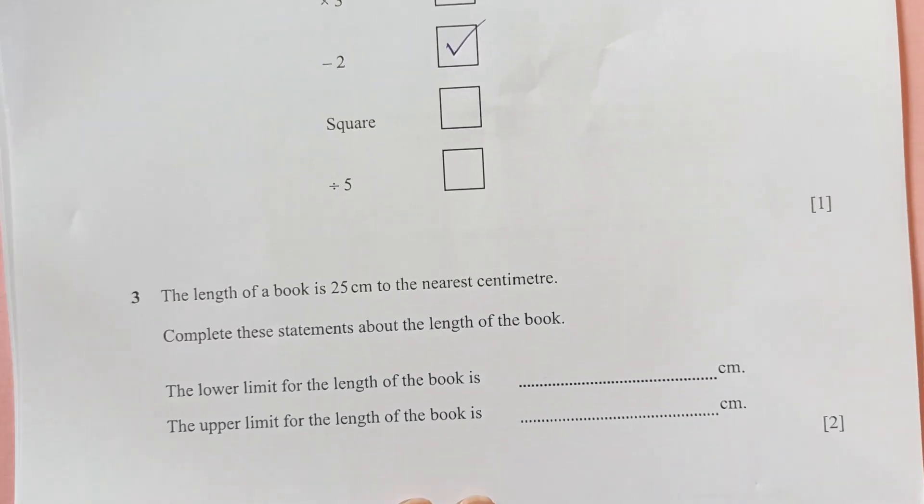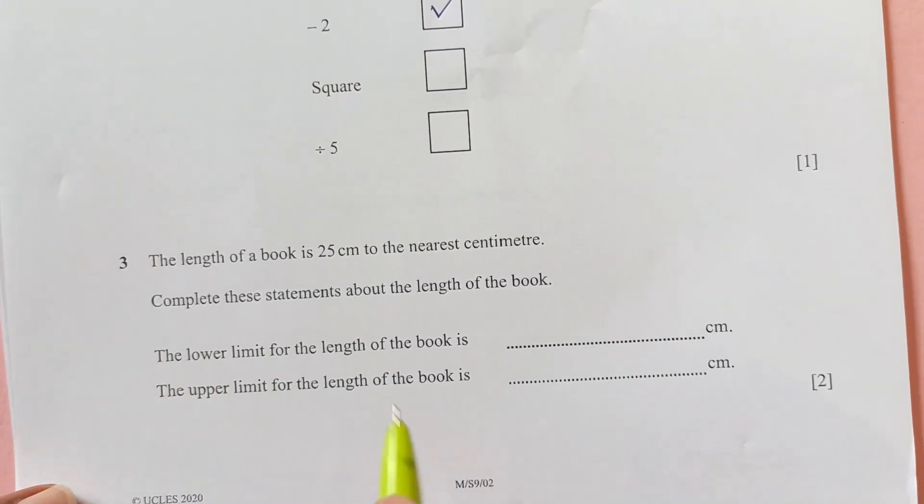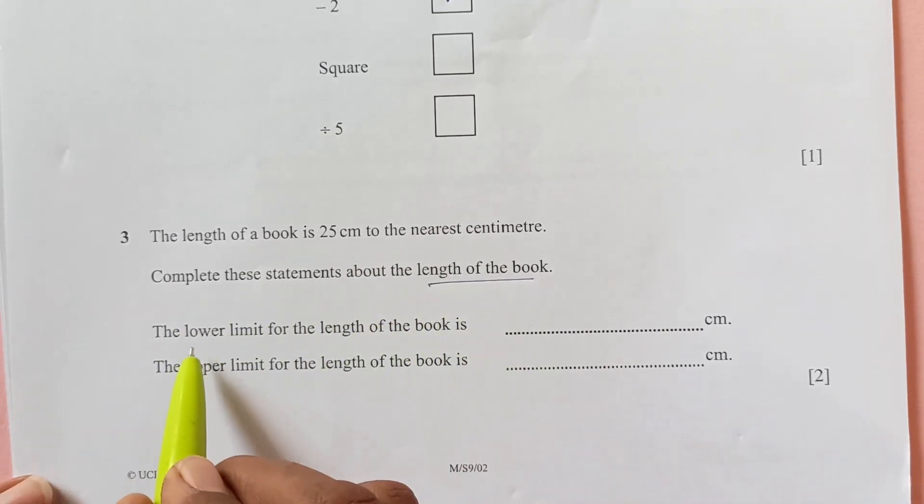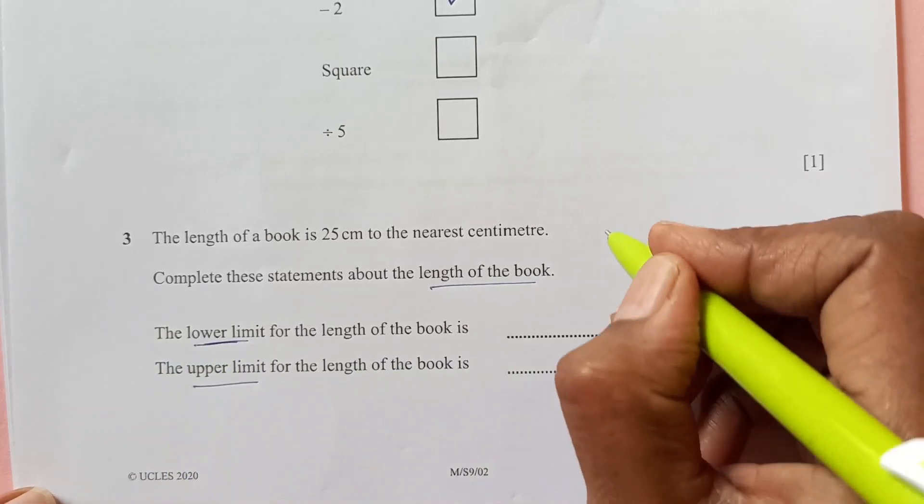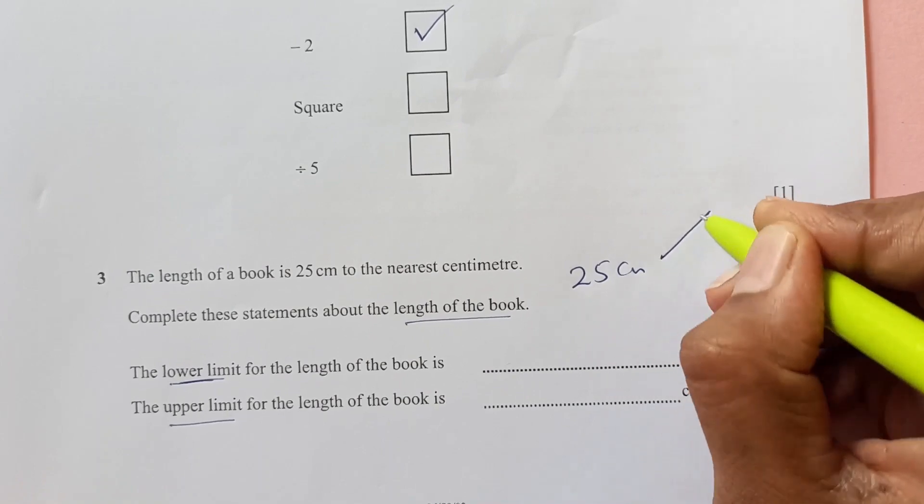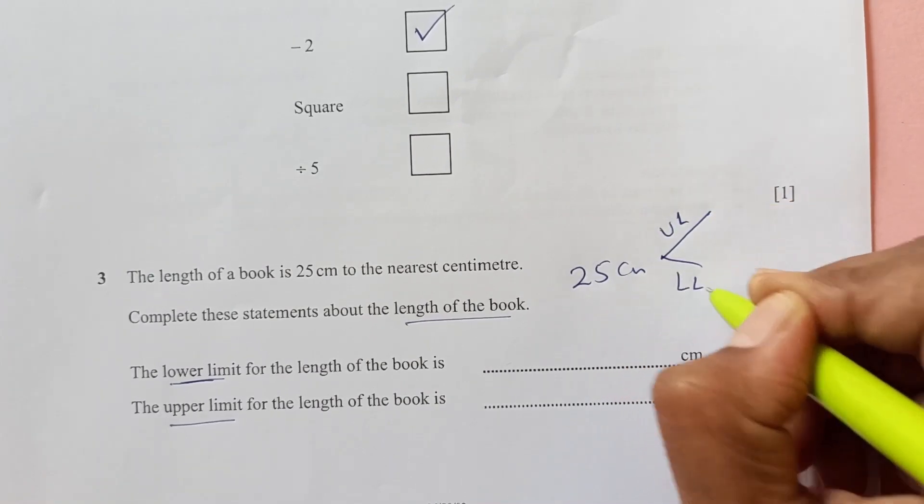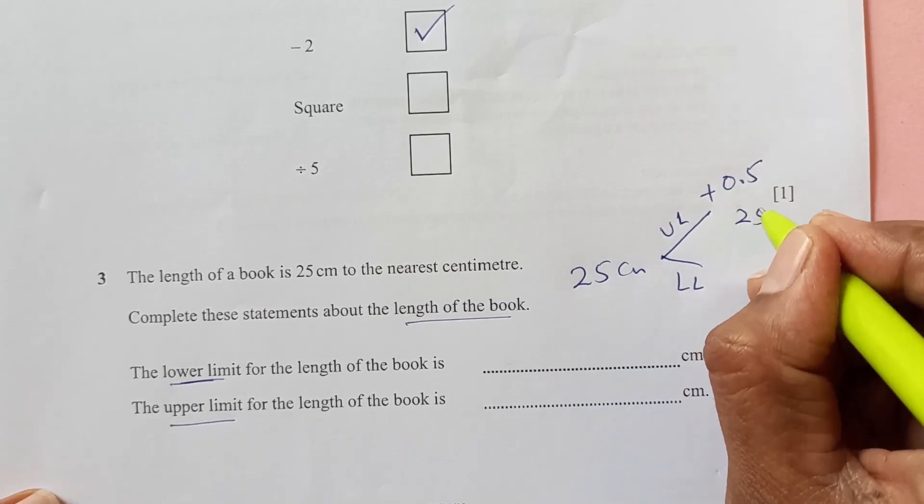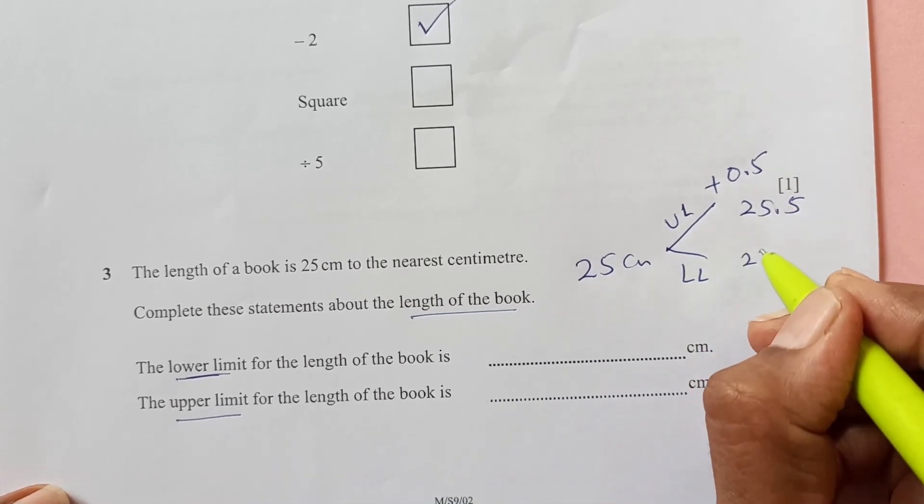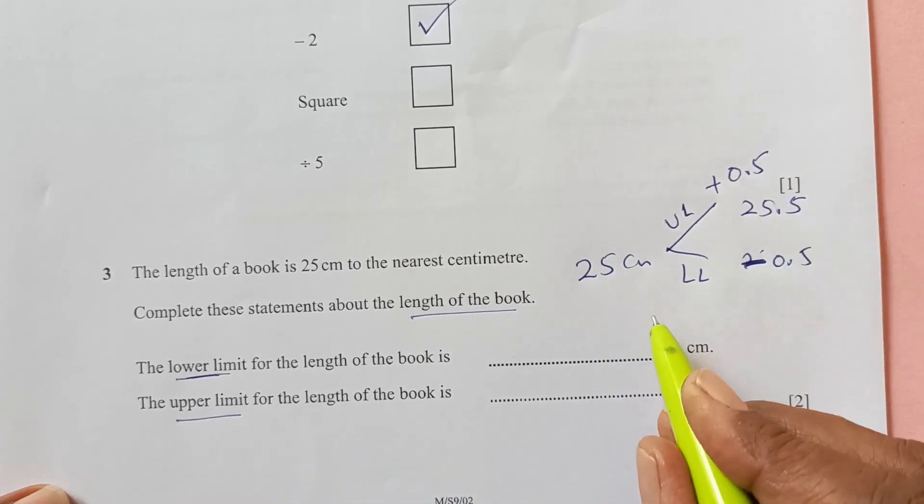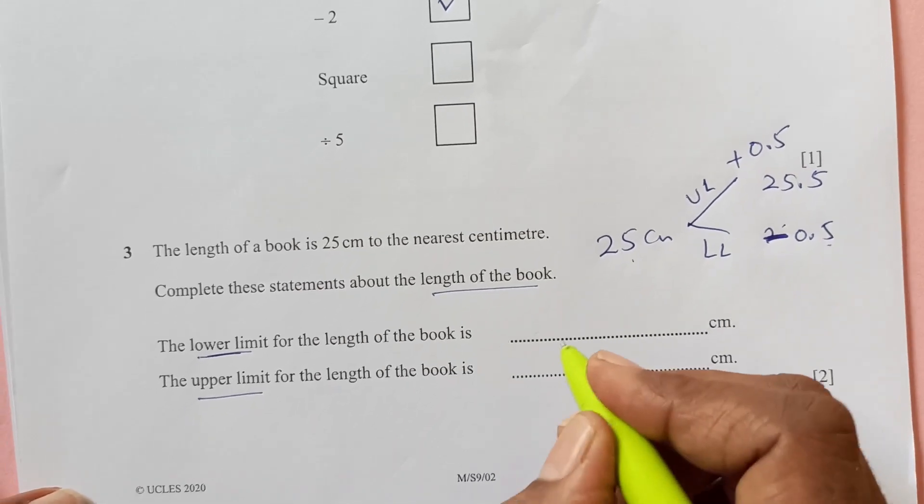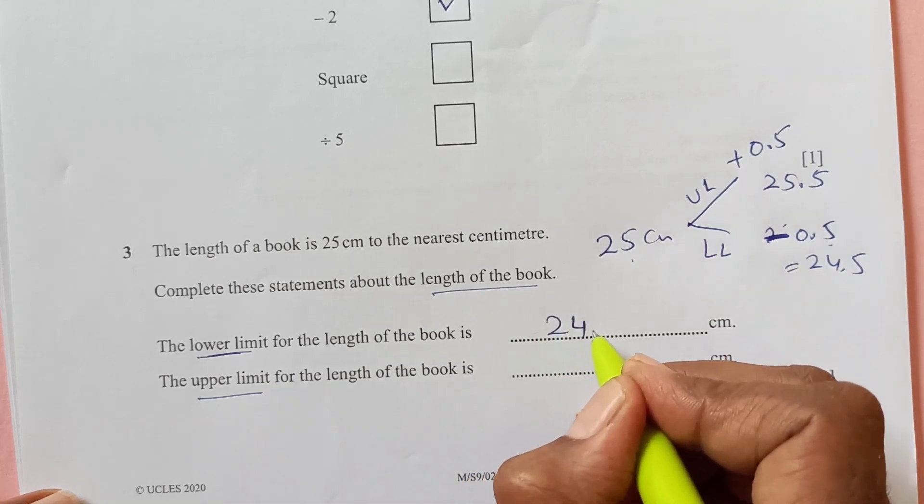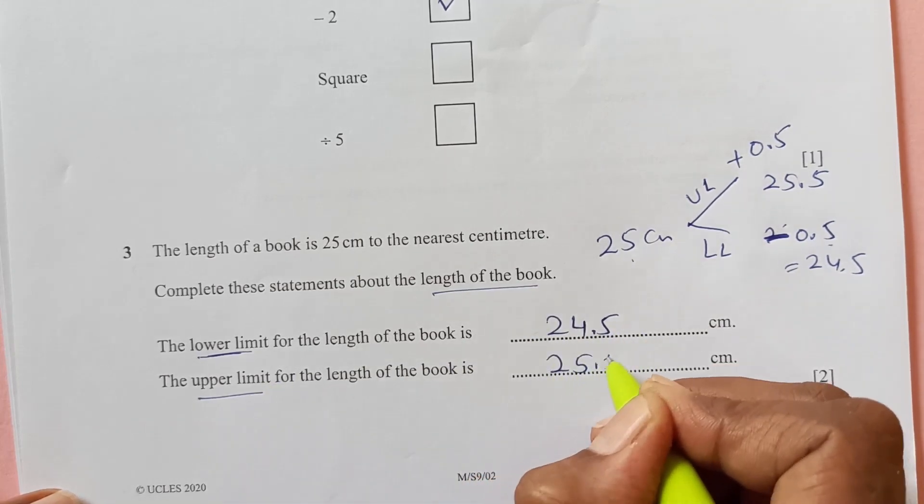Number 3, the length of a book is 25 centimeters to the nearest centimeter. Complete these statements about the length of the book. The lower limit and the upper limit. So, this is going to be upper limit and this is going to be lower limit. For the upper limit, you are going to add 0.5. So, that is 25.5 and the lower limit you are going to subtract 0.5. So, 25 minus 0.5 is 24.5. The lower limit is 24.5 and the upper limit is 25.5.